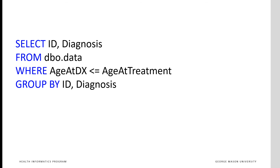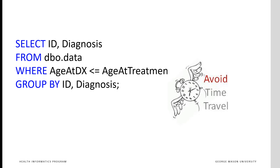To account for this, we require a code that drops diagnoses that occur after treatment. In this code, we remove complications of treatment and retain all diagnoses that occur prior to or at the time of treatment. The WHERE command states that the age of diagnosis should be less than or equal to the age at the start of the treatment. One reason to remove complications from the analysis of impact of treatment on outcome has to do with the fact that at the time of selection of treatment, we do not know the complications.